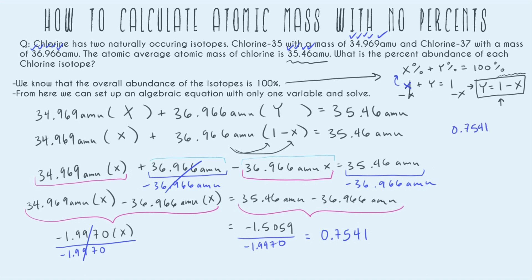Now X is still in decimal form. But remember from up here, X, if we add a percent, really just means the percent of that isotope. So I can go ahead and move my decimal point over. So 0.7541 becomes 75.41%, and that equals X percent. So now looking at what isotope was talking about X, I can see it's this one, my 34.9691. So that means that the percent abundance of my chlorine-35 of my chlorine 34.969 AMU is 75.41%. So that's half my answer.